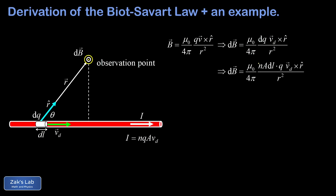In our formula we replace dq with n times the volume of the slice (a·dl) times the charge per carrier q. This whole piece is just dq — the charge on our tiny slice — and we're close to seeing the current I = n·q·a·v_d. We let dl take the direction of v_d and move the magnitude of v_d out in front, so the dl vector now indicates the direction of the current. Collecting that magnitude v_d with n, q, and a, we recognize the product in parentheses as the current I.